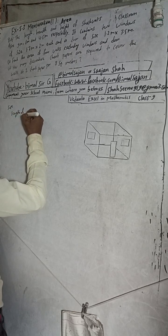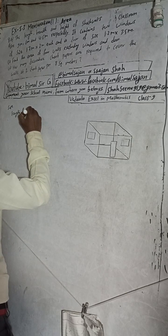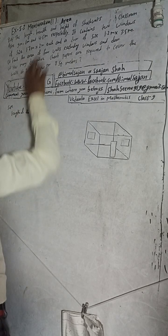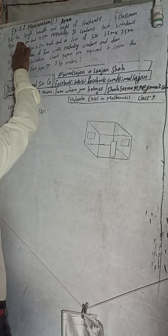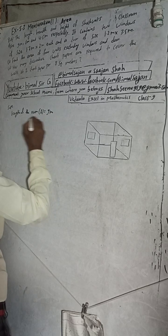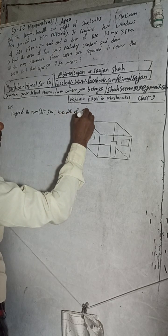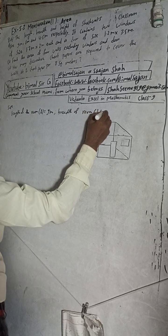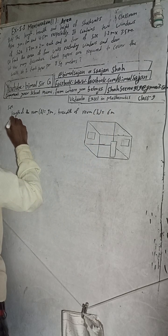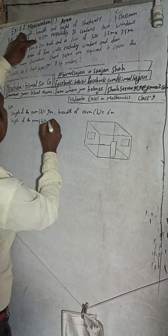Length of Saswat's classroom: length of the room L is equal to 9 meter. Breadth of the room is 6 meter. Height of the room is 4.5 meter.